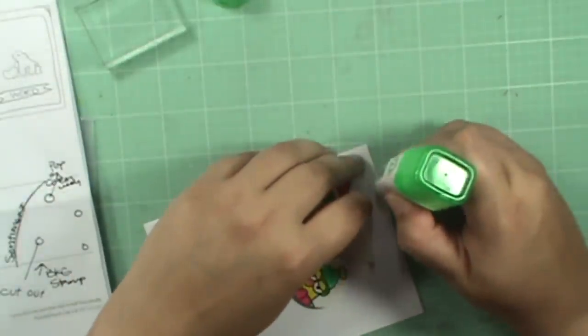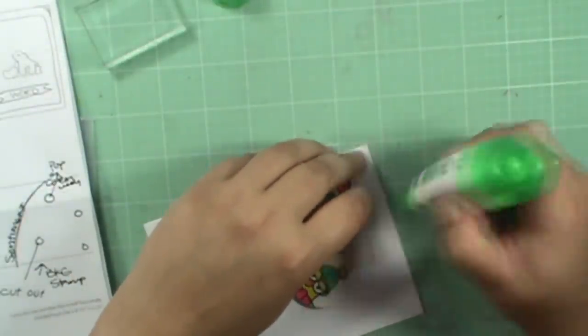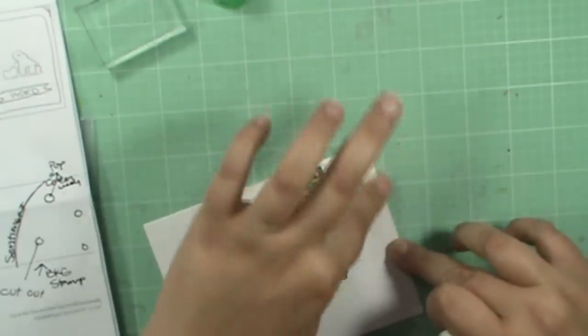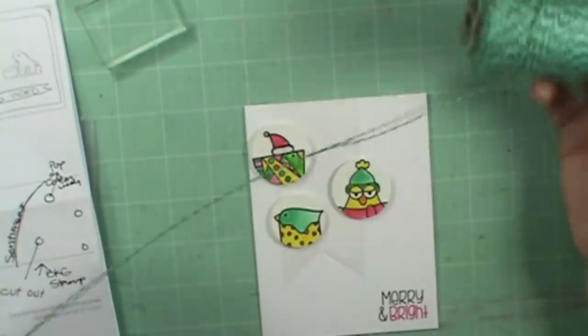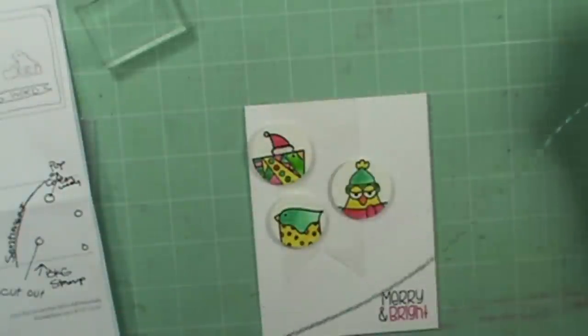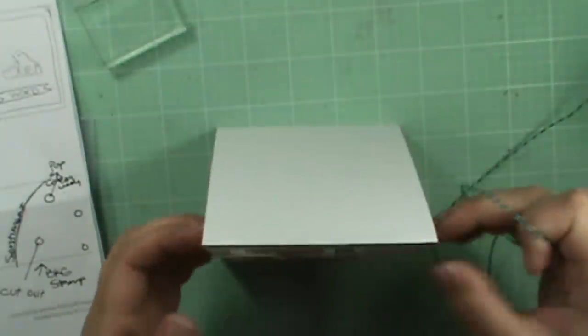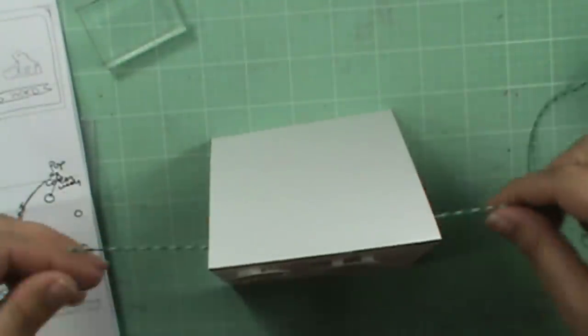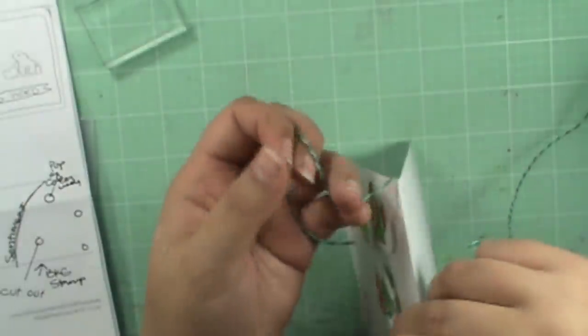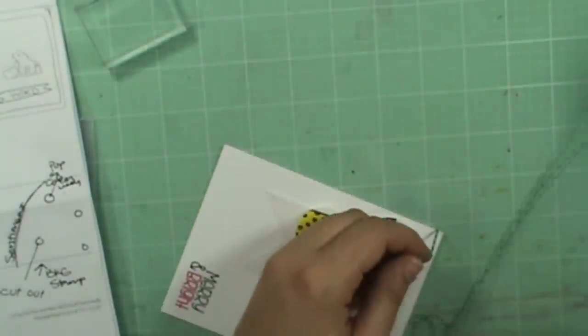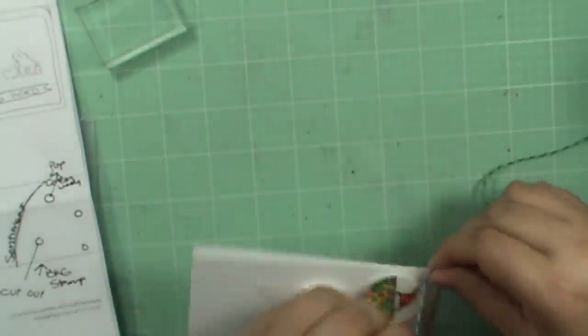What I'm going to do is take and do a really thin strip of adhesive. I have this twisted teal trendy twine and I'm going to open my card and wrap it around the front a few times.